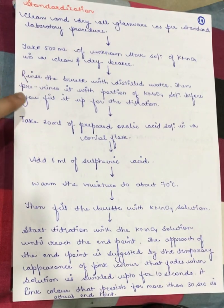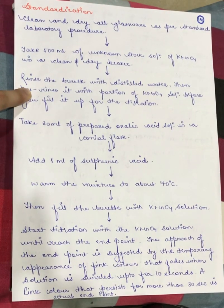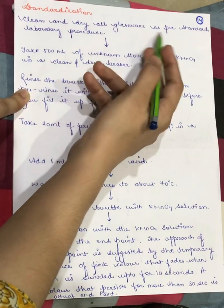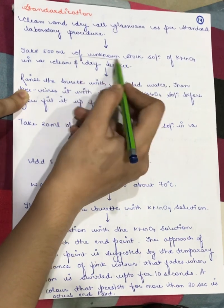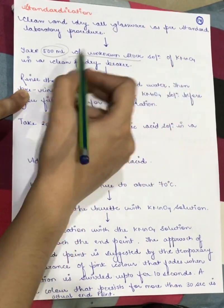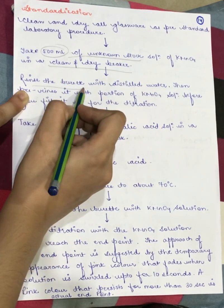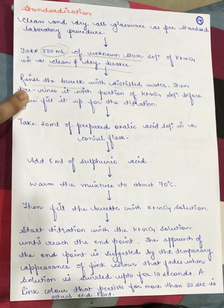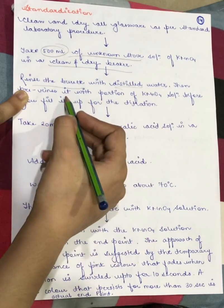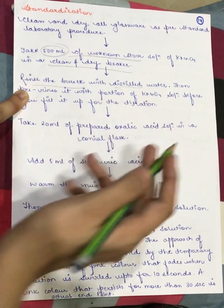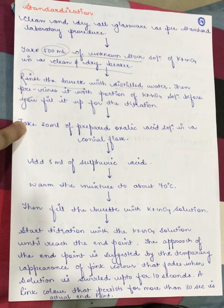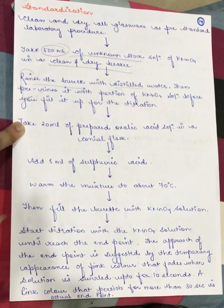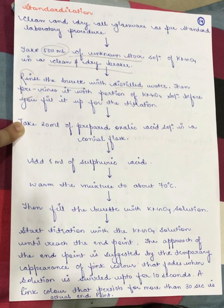Now let's see how to standardize potassium permanganate. First, clean and dry all glassware as per standard laboratory procedures. Take 500 ml of the unknown stock solution of potassium permanganate in a clean dry beaker. Rinse the burette with distilled water, then pre-rinse it with a portion of KMnO₄ to avoid impurities before filling it for titration.